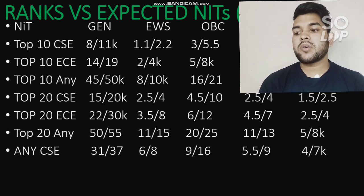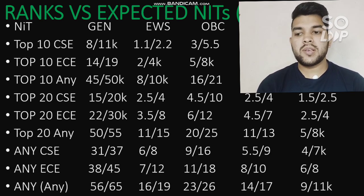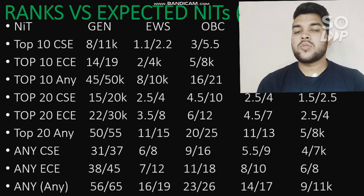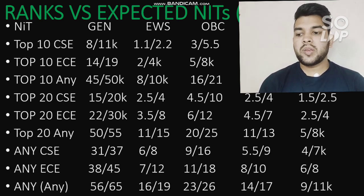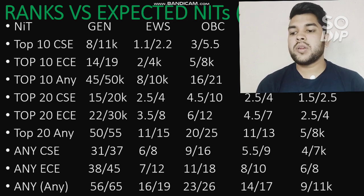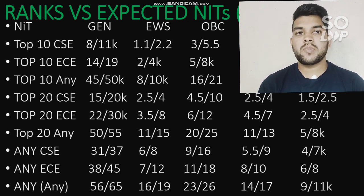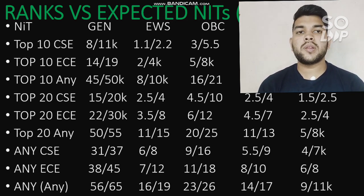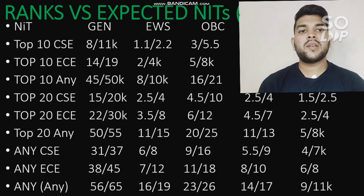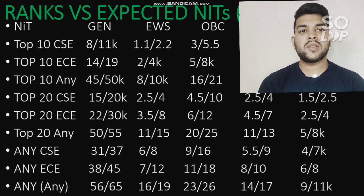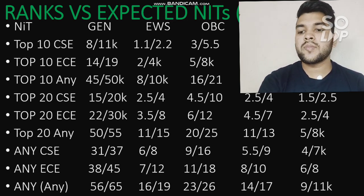For any NIT with EC branch: General category ranks are 38,000 and 45,000 for male and female; EWS 7,000 and 12,000; OBC 11,000 and 18,000; SC 8,000 and 10,000; ST 6,000 and 8,000.